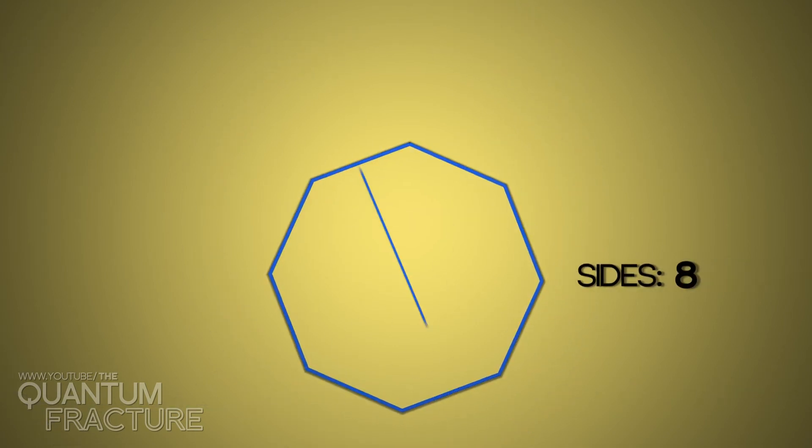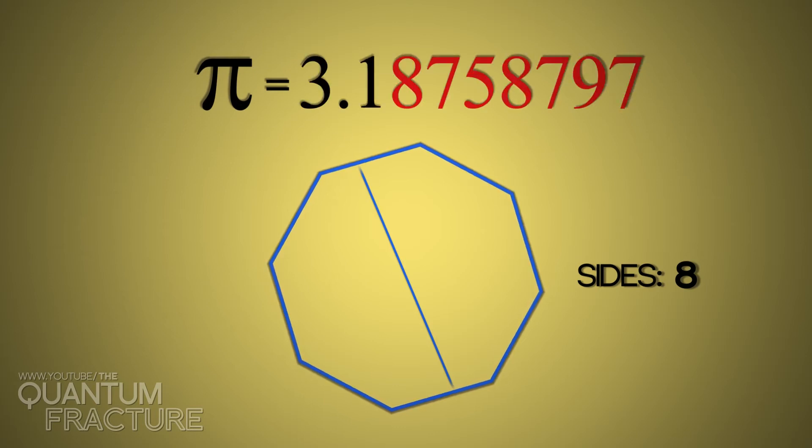This means that if we end in an octagon, we will obtain that our pi equals 3.18, not the best result, which is normal.